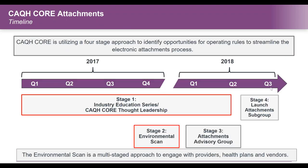We have a timeline with specific milestones for our attachments work. In Stage 1, we're conducting a series of industry education and thought leadership events, and we've just launched our environmental scan. Findings from the environmental scan will help us move into Stage 3 — an attachments advisory group co-chaired with core participants — to look at those findings. Later in 2018, we'll launch a subgroup to tackle potential operating rules for attachments. We hope to engage all stakeholder types: providers, health plans, vendors, and clearinghouses.